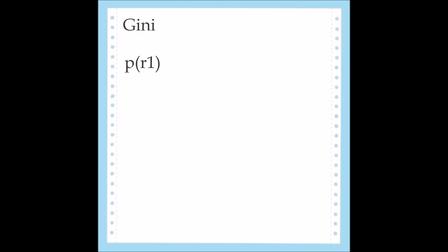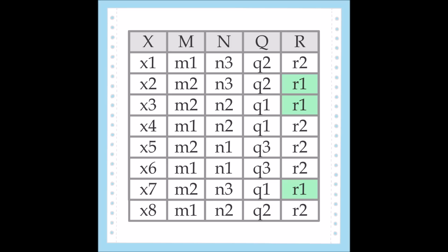In order to begin constructing our tree, we need to determine which attributes to split the table on. There are many methods for determining these splitting attributes. In this example, we will be using the Gini index. One definition for the Gini index is the expected error rate of the system. To calculate this, determine the probability of getting each distinct value of the decision attribute.